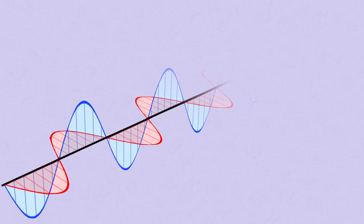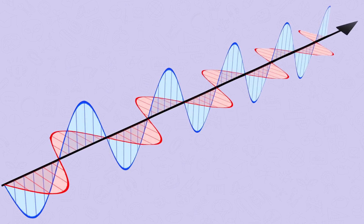The electromagnetic spectrum is made up of transverse waves. These are waves of vibrating or varying electric and magnetic fields. Because it's made of fields, it does not need particles to help it propagate or travel, unlike mechanical waves like sound. It can travel through a vacuum — it's how light reaches us from the sun through space. All waves in the electromagnetic spectrum can travel through a vacuum.